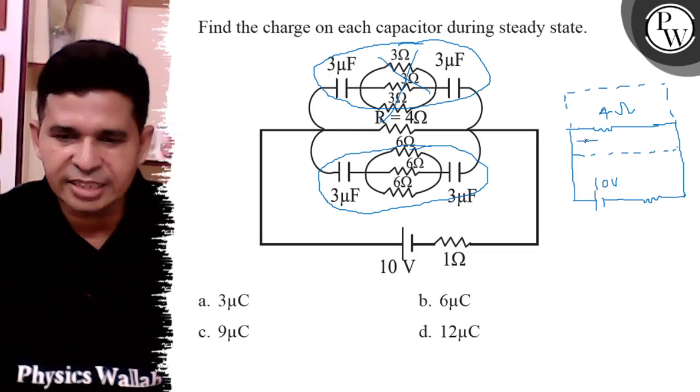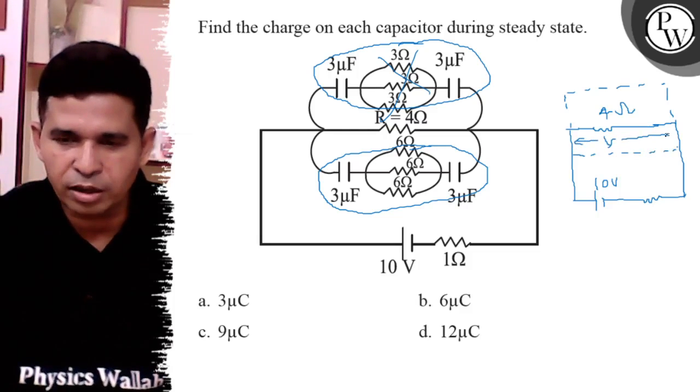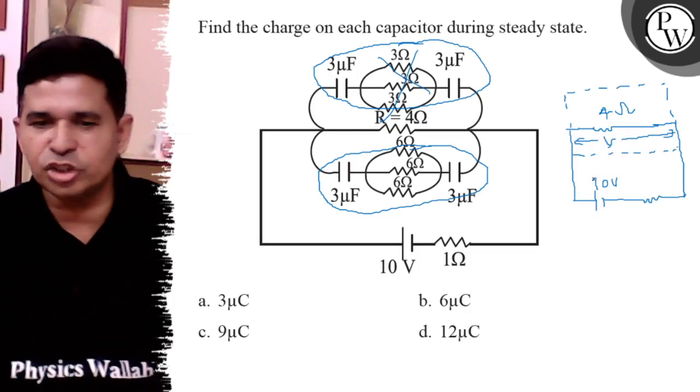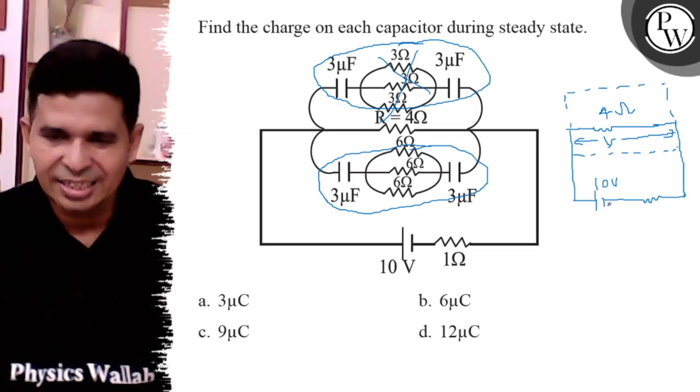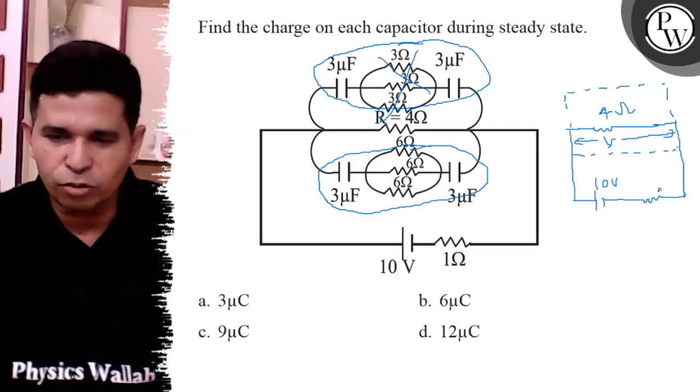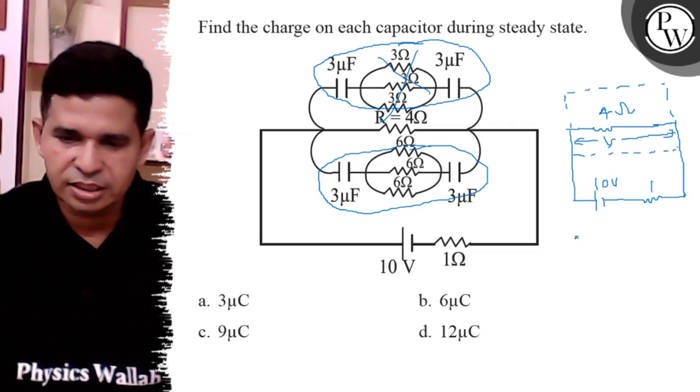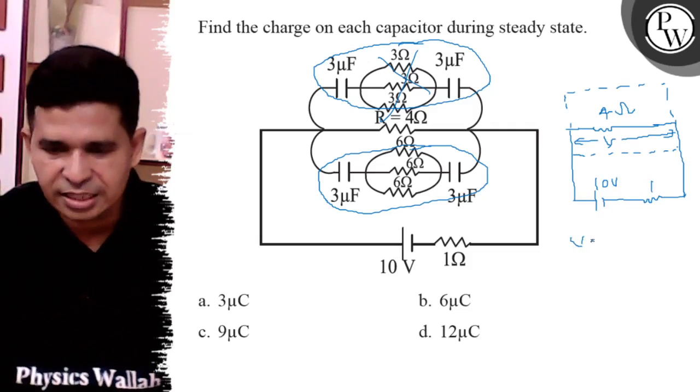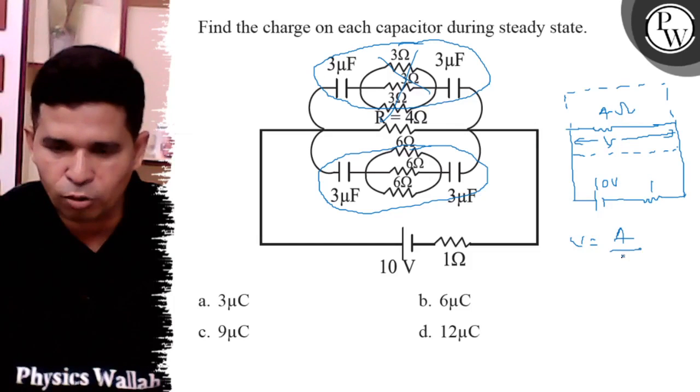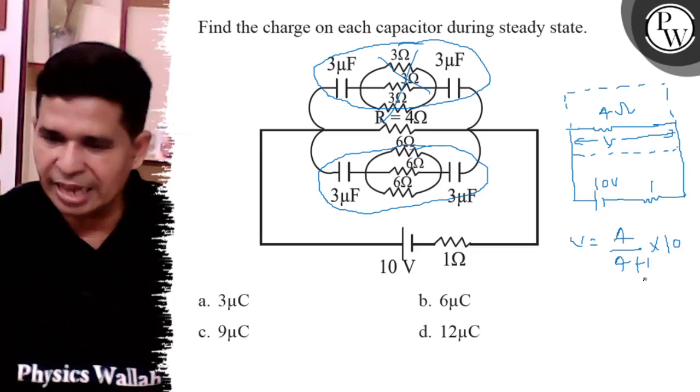Now, find the voltage across removed, voltage across parallel resistance of removed capacitance. So, it is divided into 4 is to 1. And our interest is in 4. So, voltage is 4 upon 4 plus 1 into 10. So, it is the 8 volt.